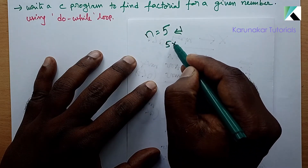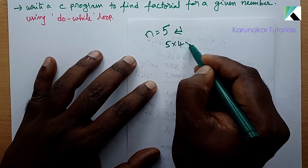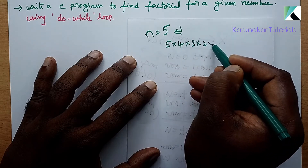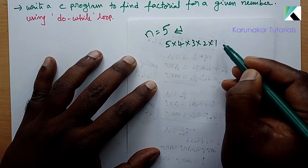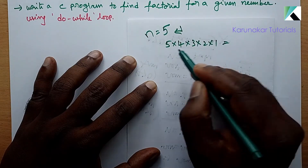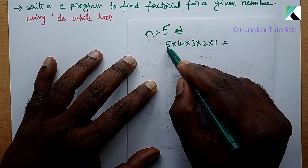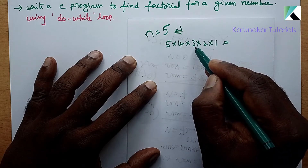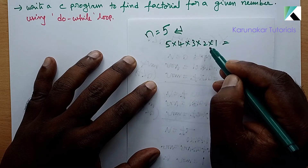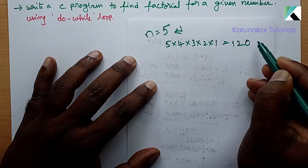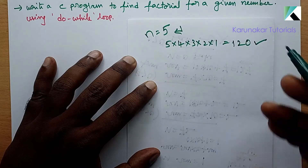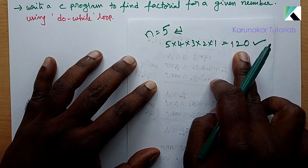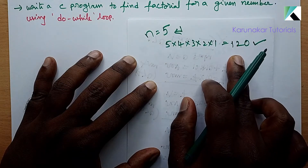5 into 4 into 3 into 2 into 1 is equal to 120. So this is the desired answer. The desired output is 120.